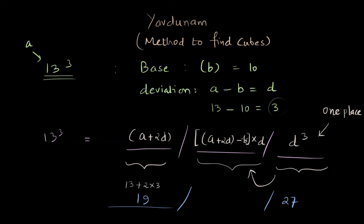And let's find the middle part. Now we already have found A plus 2D, so let's keep it there. 19 minus B, B is 10, and this whole thing multiplied by the deviation, which is 3. So this is 9 times 3, which is 27. Let me just write 27 here.